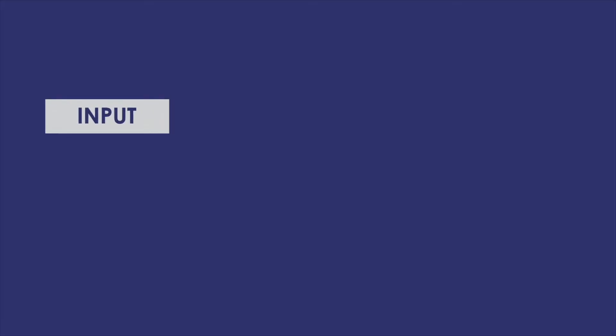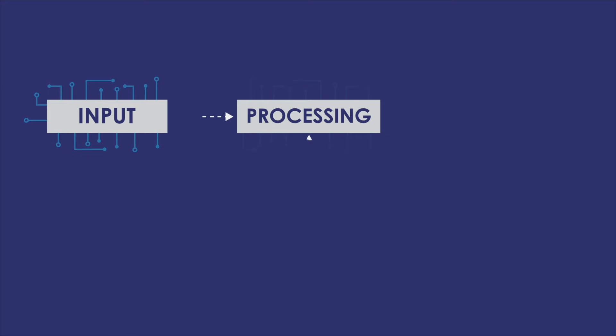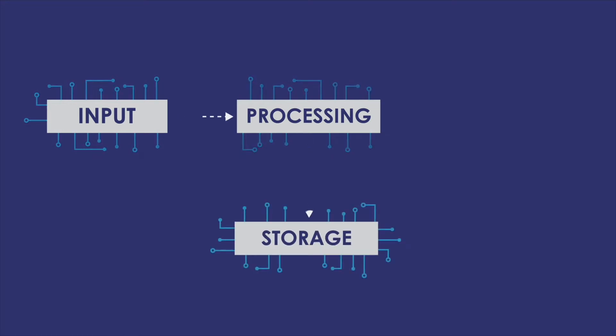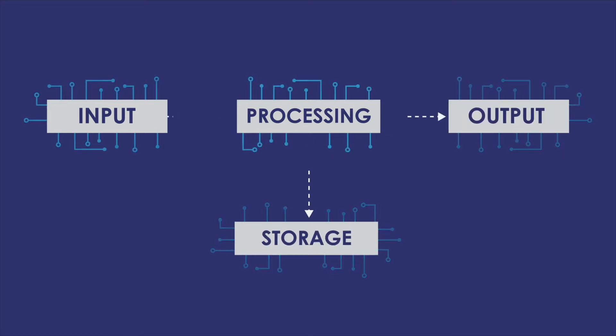Today we will be discussing the four basic operations of a computer system. We have the input unit, processing, storage, and output unit.